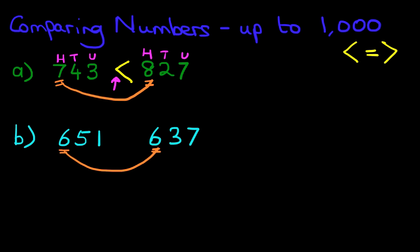Now the 6 and the 6 are the same. If they are the same, we cannot answer this question straight away. We're going to have to move to the tens. So let's have a look at the tens. We've got 5 on the left, 50, and we've got 3 on the right, which is 30. So we're comparing the two.